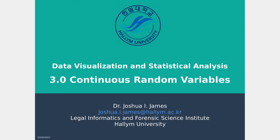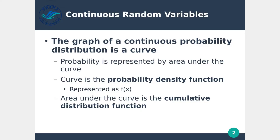Welcome back everyone. Today we're going to talk about continuous random variables. Continuous random variables are easiest to understand if you think about a graph — some type of distribution on a graph. Continuous random variables are the probability that some event is going to happen based on whatever distribution you're looking at. We'll take a look at some graphs and distributions to clarify what's going on.